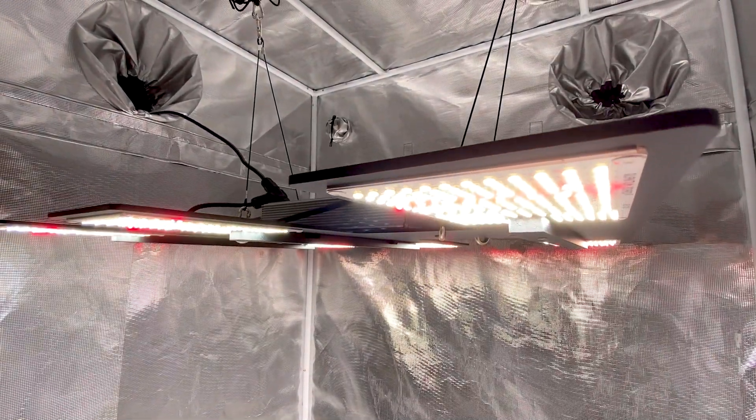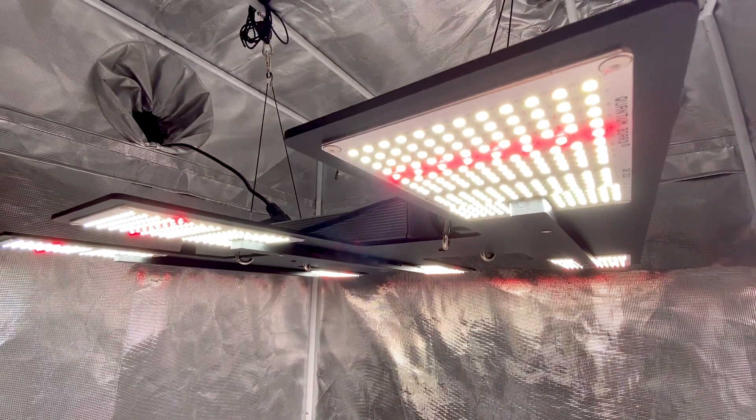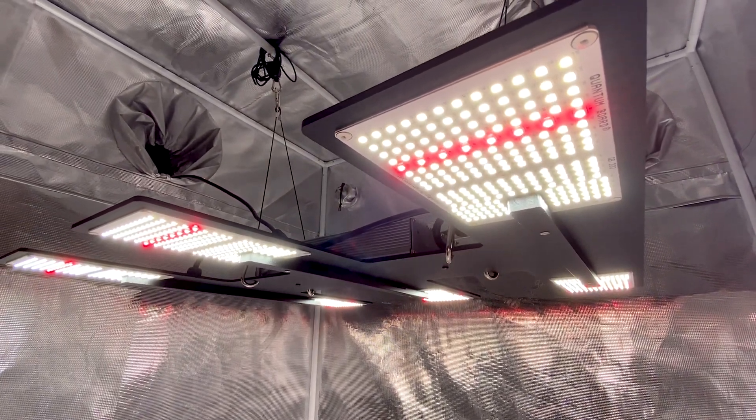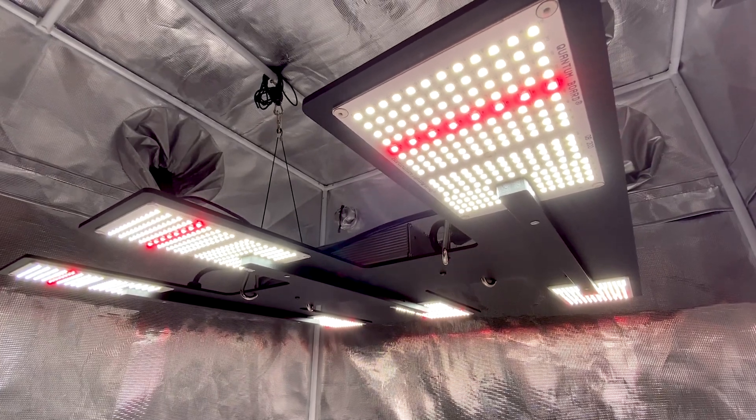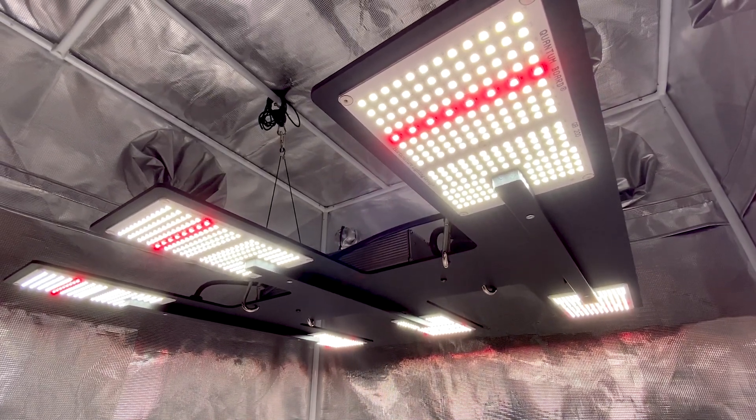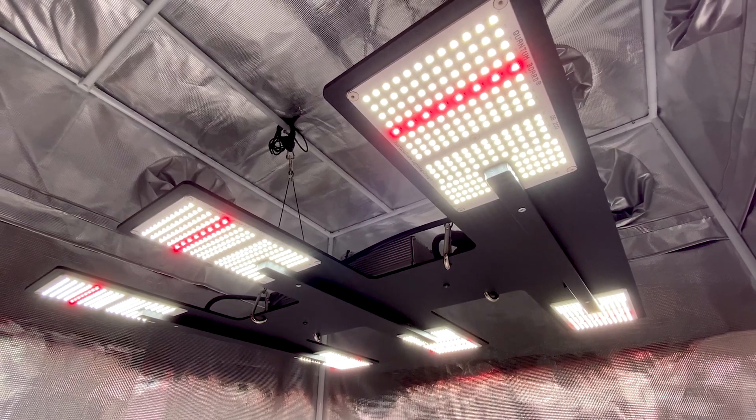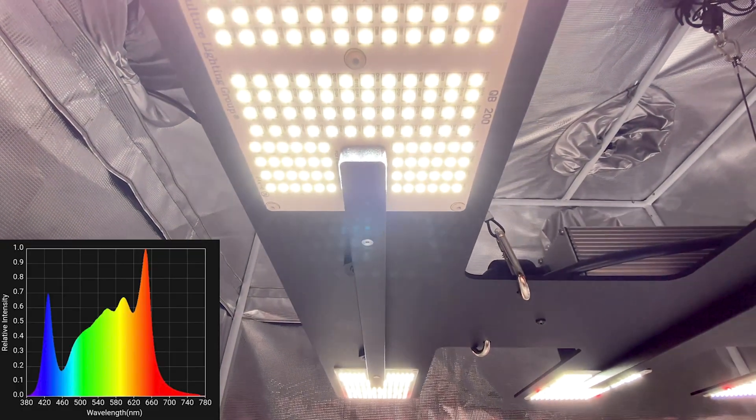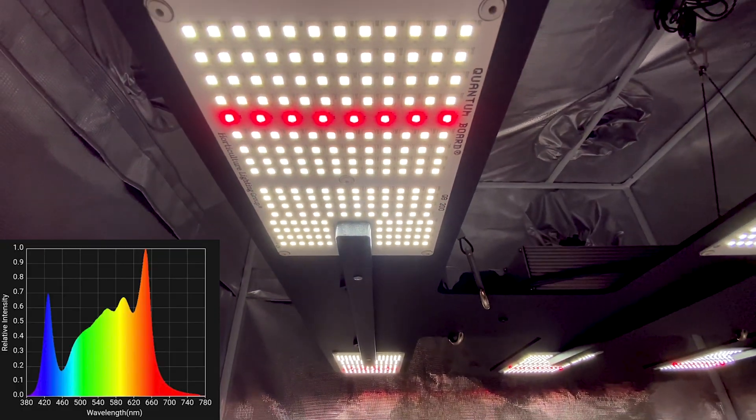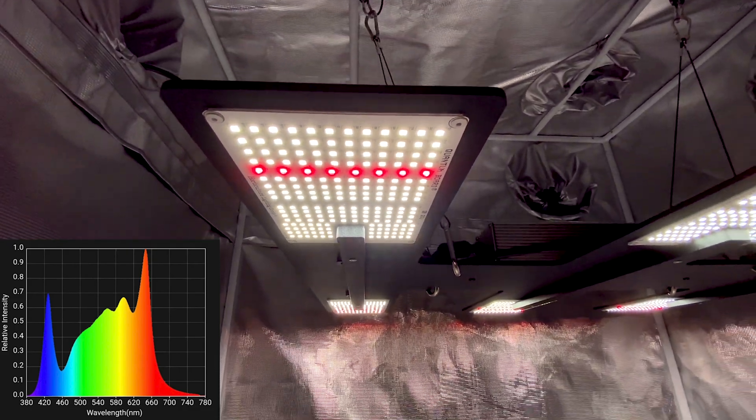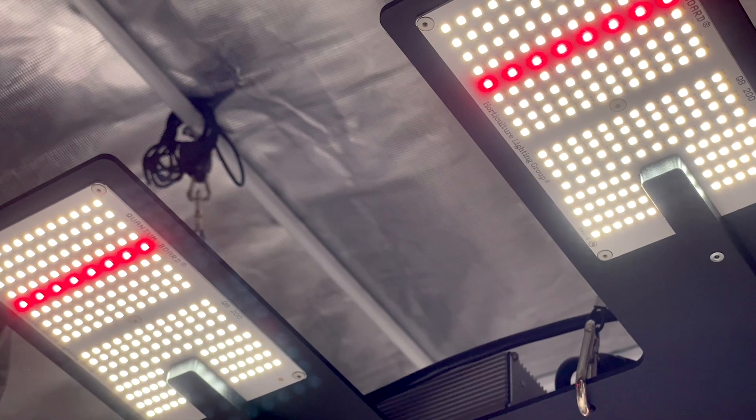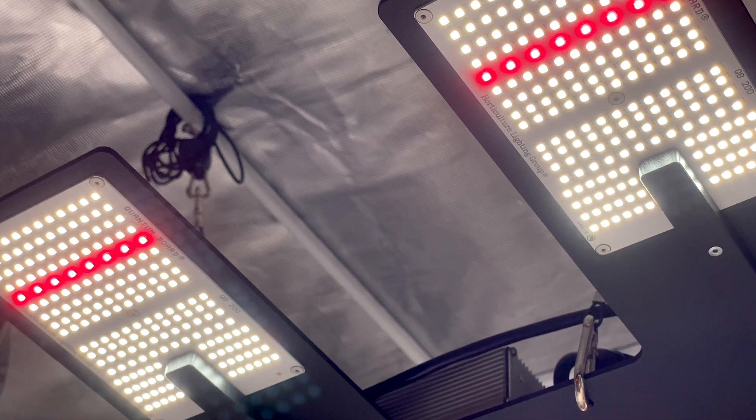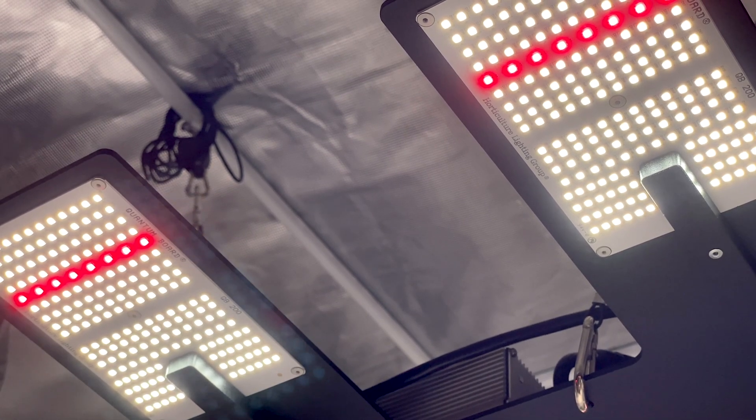The HLG Blackbird uses Horticulture Lighting Group's new full-spectrum QB200 quantum boards. These QB200s contain Samsung 301H and Osram Oslin SSL 660nm deep reds. The QB200 spectrum contains a higher bump in red and blue compared to the QB288 R-spec spectrum. There are not any UV diodes incorporated into the boards but there is some far red in the spectrum from the white diodes.